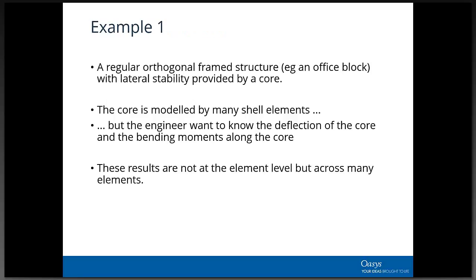As a first example: if you've got a fairly regular orthogonal frame, like a typical office block, you may have a core providing lateral stability. You might model that core with lots of shell elements to capture detail such as lift openings. But you may also want to know how the core behaves as a whole - what bending moments exist along it. That means aggregating results across many elements, which is exactly what an assembly enables.